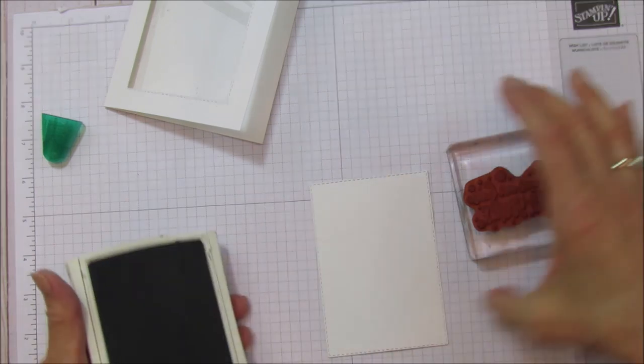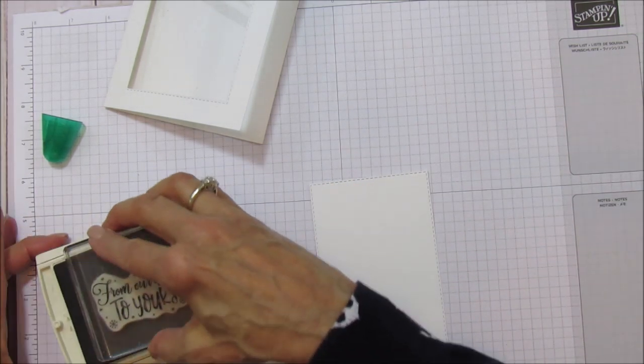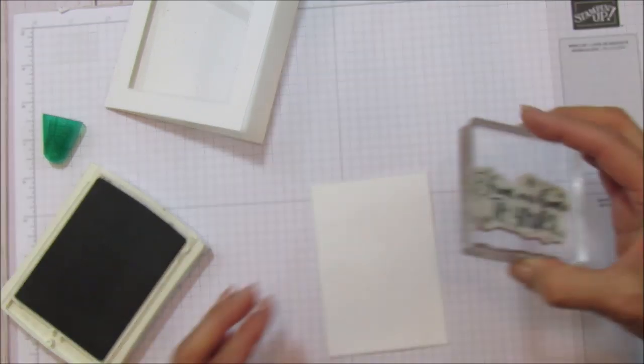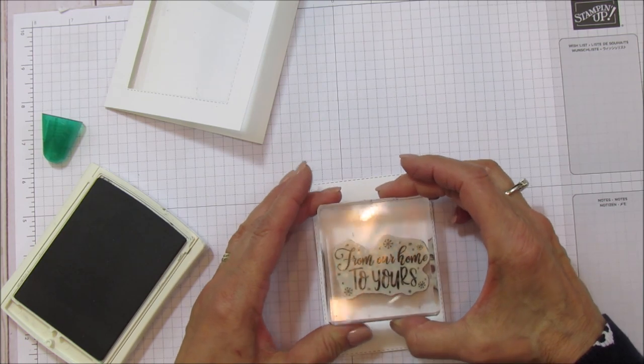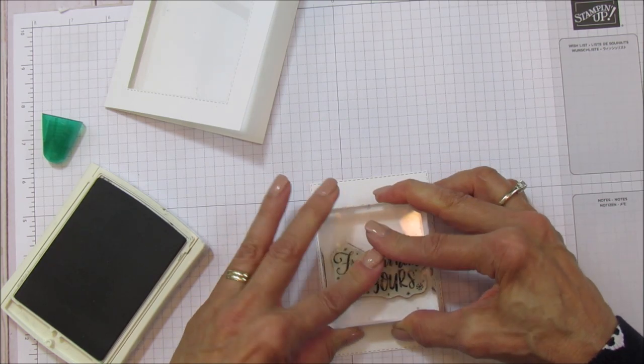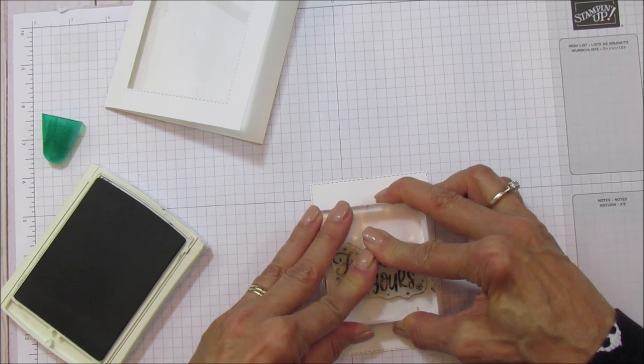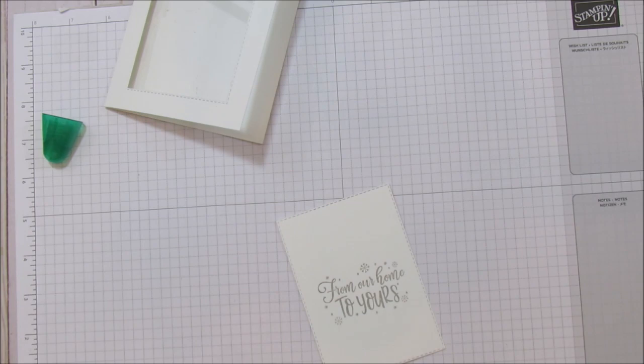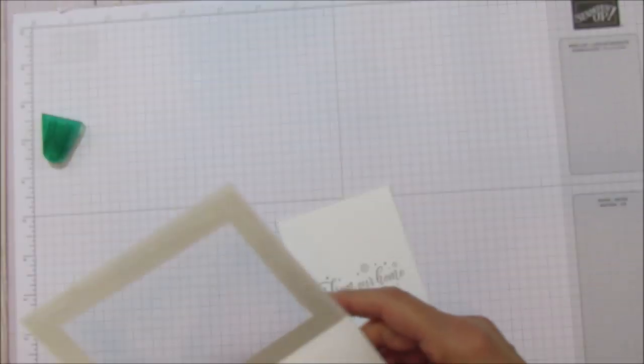And Merry and Bright, this is a really nice one to have. We're going to stamp that in smoky slate. Again, make sure you center this really good. So if I get my head in the way I'm sorry. I'm going to try to get it centered here really good. So it's very subtle which I really like.